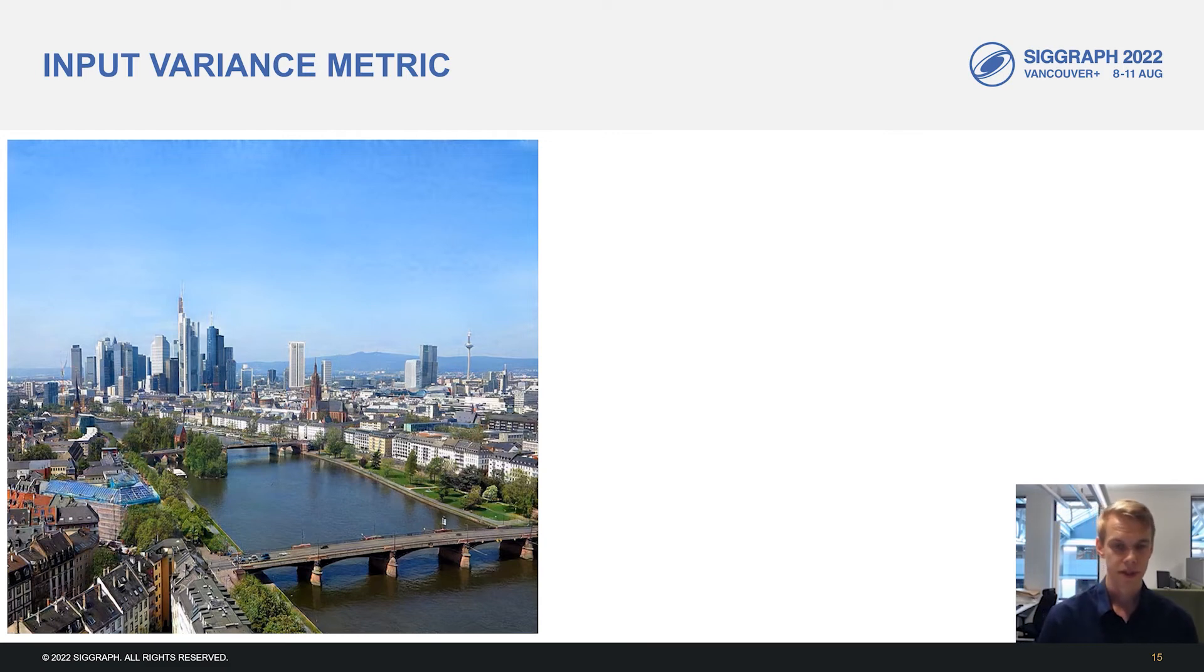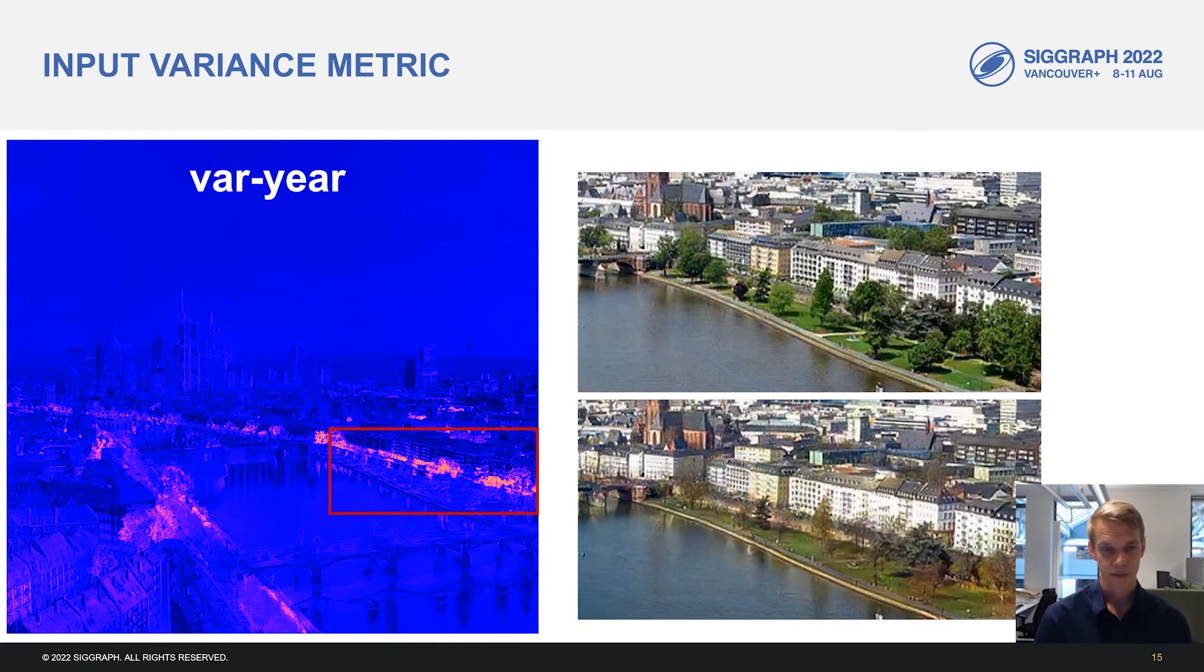An interesting thing we can do with our models is to visualize the changes in the image spatially caused by different inputs. In other words, we can compute the variance of every pixel with respect to all of the inputs that we have. Here, we visualize the variance of the year cycle for all pixels. And we can see the trees on the right being highlighted as they change drastically with the year cycle.